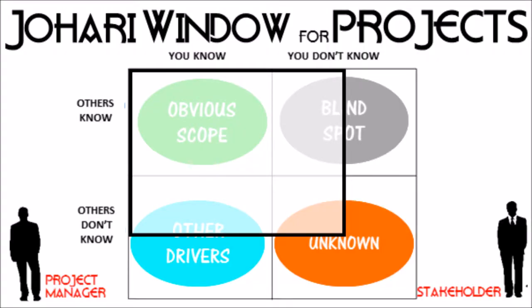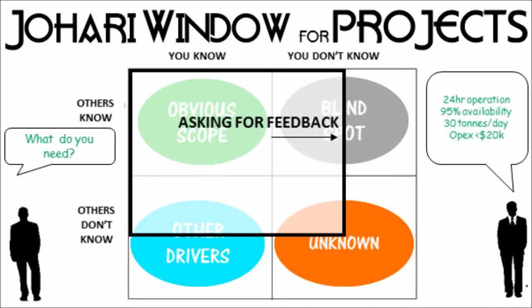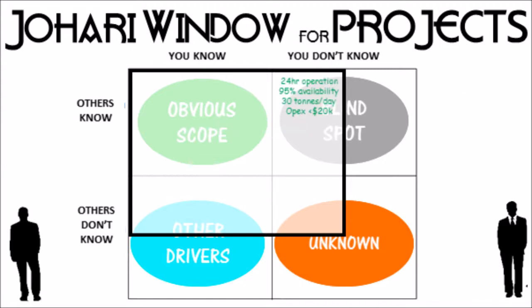The first activity we talked about was asking for feedback. In the original case it was asking people what they've observed about you. In this project example, you ask your stakeholders for feedback on what they perceive the scope of the project to be — uncovering their expectations. When you're aware of what others expect, you can make an informed choice on whether or not it's practical to fulfill that expectation.